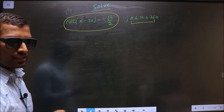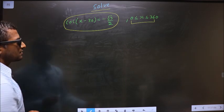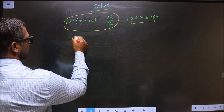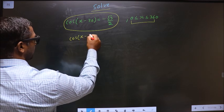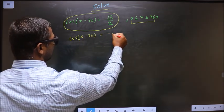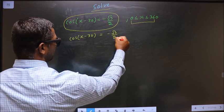First, the given equation is cos(x - 30) = -√3/2.